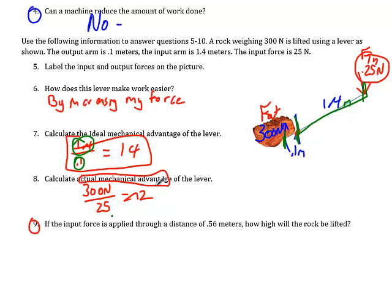Now, down here I've got the actual mechanical advantage. And so I come over here to the force, output force, input force. 300 divided by 25. Remember the newtons cancel. It's a unitless number. This equals 12.